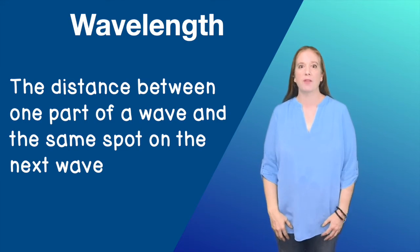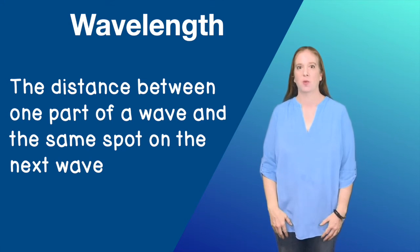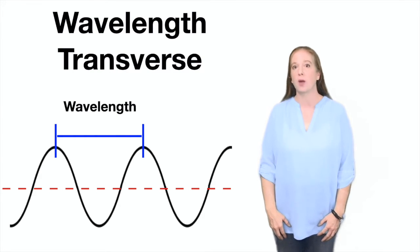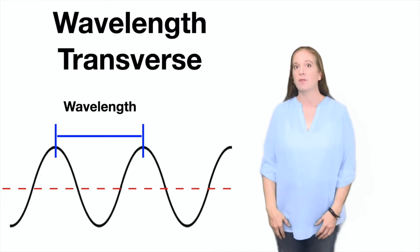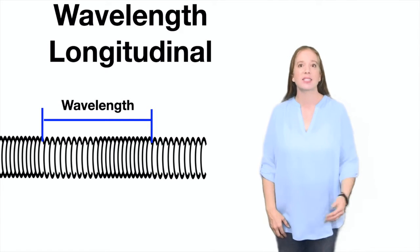The wavelength of a wave is the distance between one part of the wave and the same spot on the next wave. The wavelength of a transverse wave can be measured from crest to crest or trough to trough. The wavelength of a longitudinal wave can be measured from one end of one compression to the end of the next compression, or from the end of one rarefaction to the end of the next rarefaction.